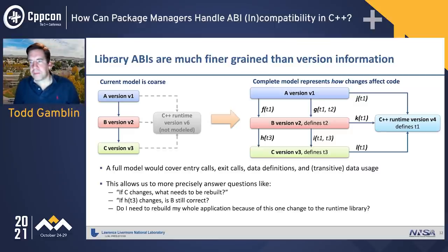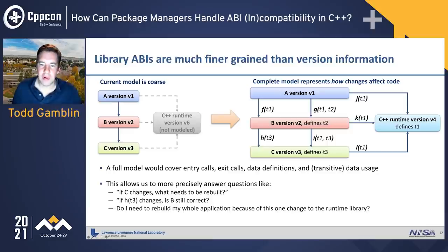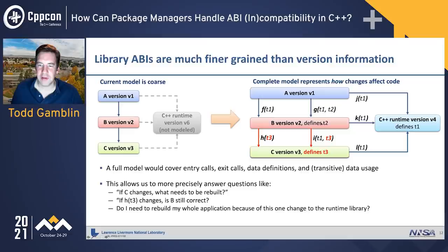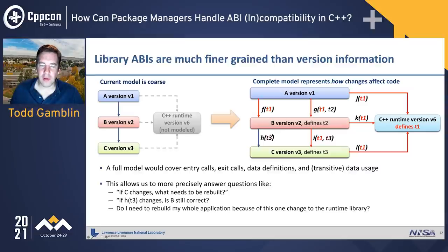A deeper model lets us answer more questions about dependency relationships. For example, if you redefine T3 in library C and only B uses T3 privately, the only package you need to rebuild is B because nothing leaks out to A. Similarly, if T1 changes in the C++ runtime library and everything is using T1, you may have to rebuild the whole stack — but you could know that just from the model. To really model ABI, you need a much deeper model of the relationships between the libraries in your stack.